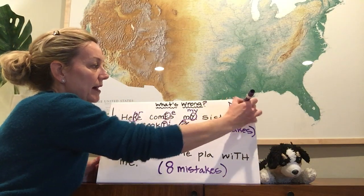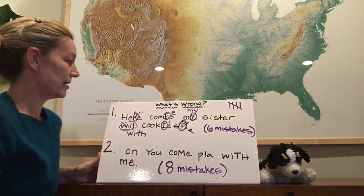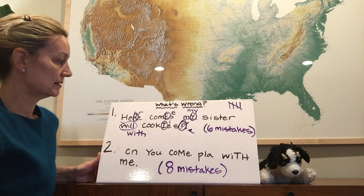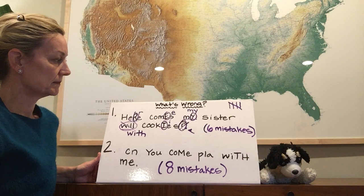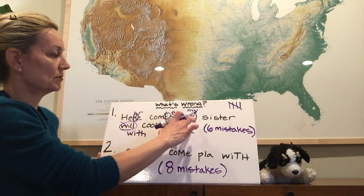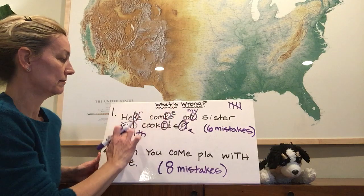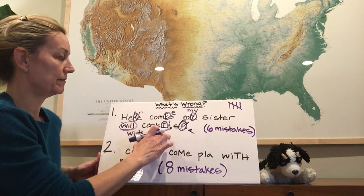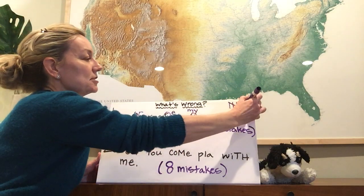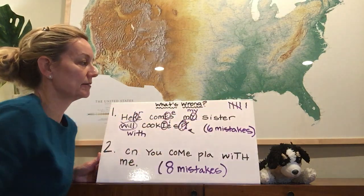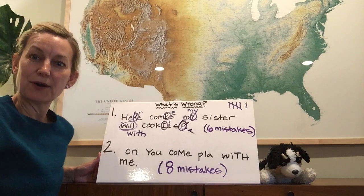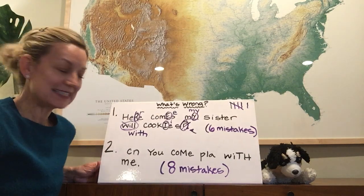Let's see, I have five right there. Am I missing any? One, two, three, four, five — six. I think I just forgot to put another tally mark. All right, we're on to the second sentence.